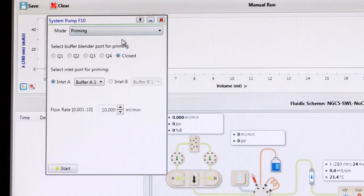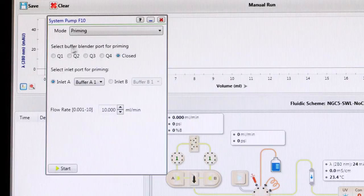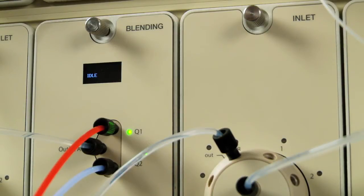Select the priming tab. Select the Q1 port. The Q1 valve opens on the buffer blending valve. In the NGC Discover series with buffer inlet valves, Port 8A will additionally be selected automatically. Note that Q1 will remain open until Closed is selected.